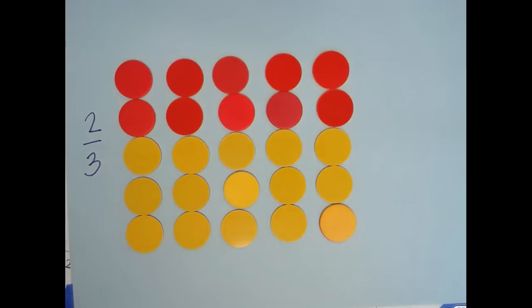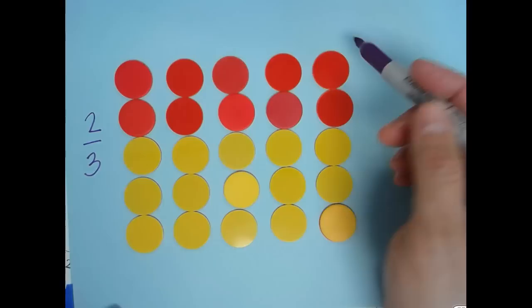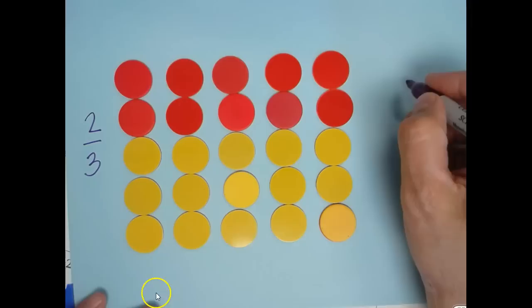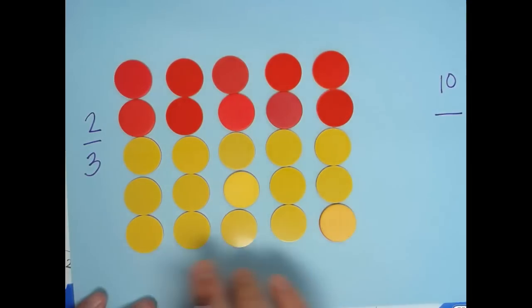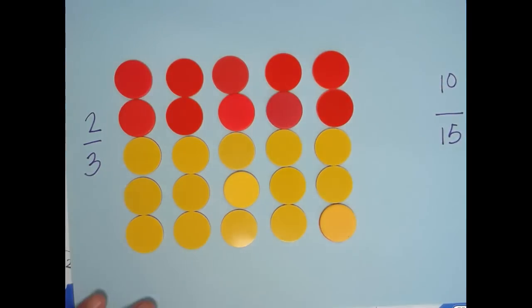Here we have another example of a two to three ratio, two reds to three yellows. But we've extended it out so that there are five groups. So that is a ratio of ten, and there are three groups of five yellows to fifteen. Ten to fifteen is an equivalent ratio to two to three.